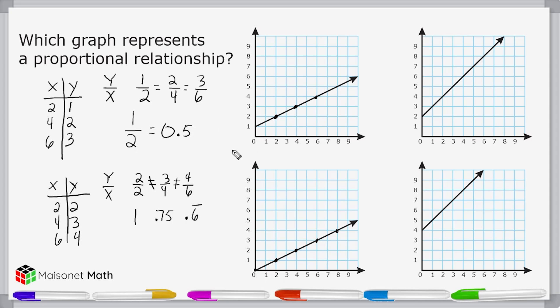So when determining whether or not a graph represents a proportional relationship, just remember, it has to be a straight line, and it also has to go through the origin.